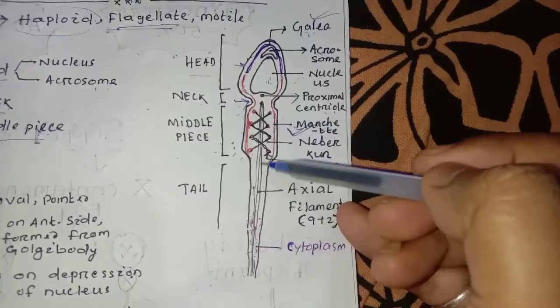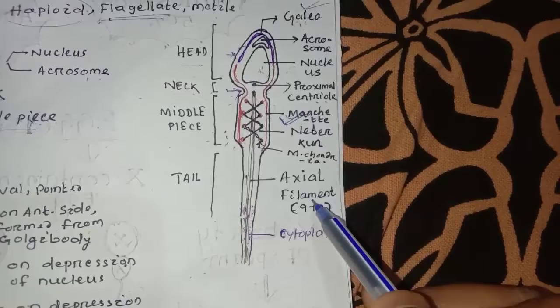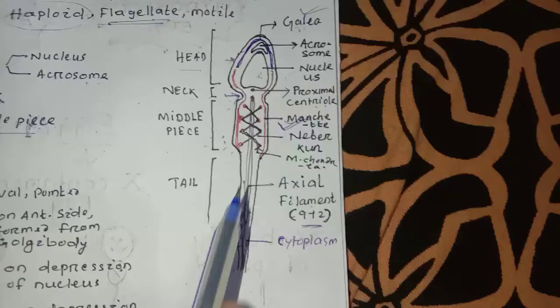The axial filament arrangement is 9 plus 2 — this is the standard single arrangement of the axial filament.